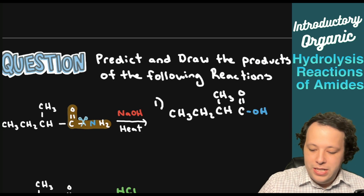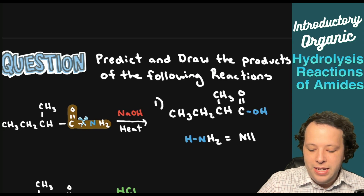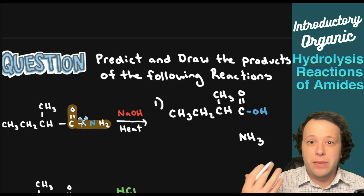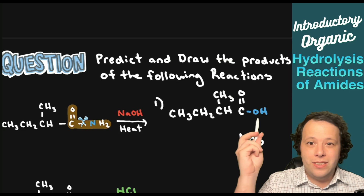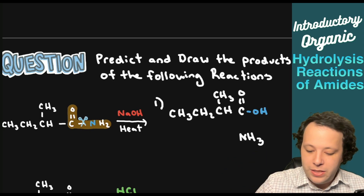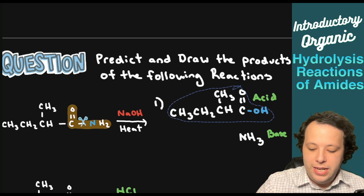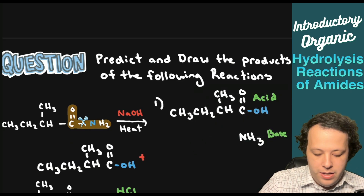Then we have the C double bond O attached to our OH from water, which was used to cut that bond. The other portion is an amine — we add a hydrogen to get NH2, which we can simplify to NH3 or ammonia. Being that this has a basic condition, the sodium hydroxide is going to react with the acid — which is the carboxylic acid on the top. A base is going to react with an acid.